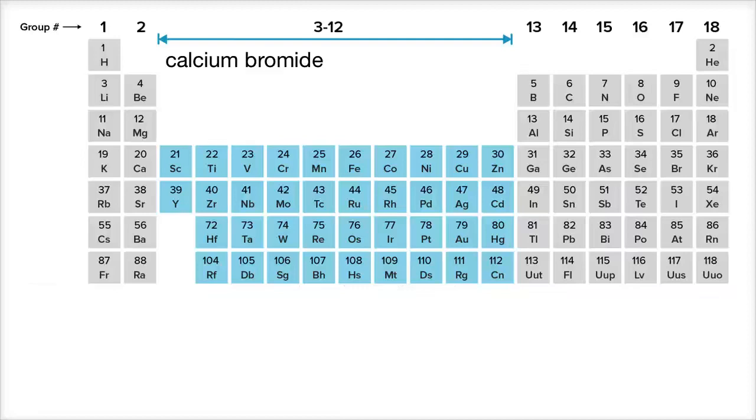Let's now see if we can come up with the chemical formula for the ionic compound calcium bromide. And like always, if you are inspired, pause the video and see if you can come up with it on your own.